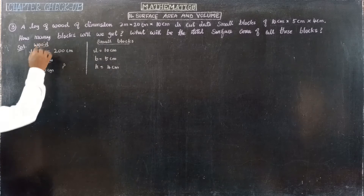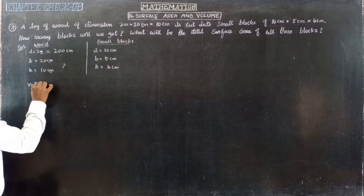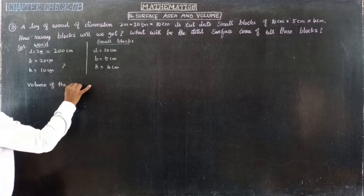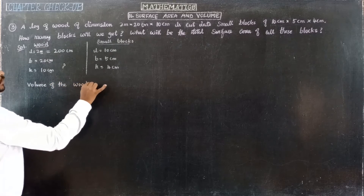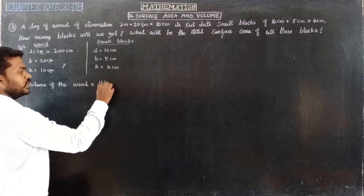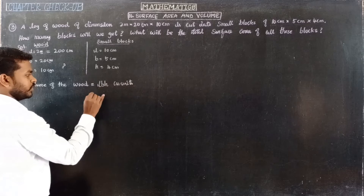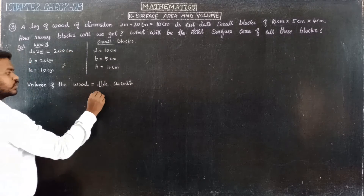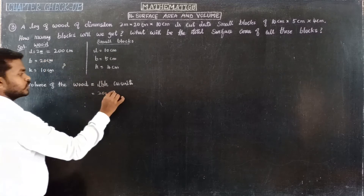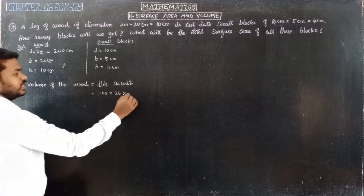The volume of the wood is equal to L × B × H cubic units, which is 200 cm × 20 cm × 10 cm.